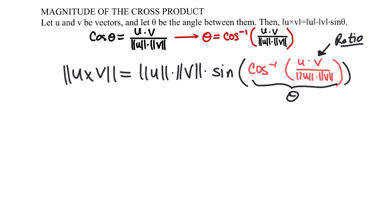I'm going to create a right triangle. I know that my adjacent to my hypotenuse would be theta, with u dot v over the magnitude of u times magnitude of v.